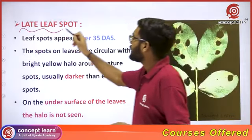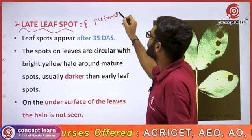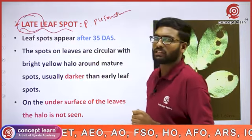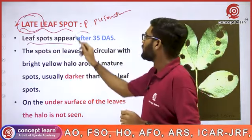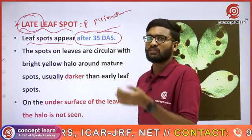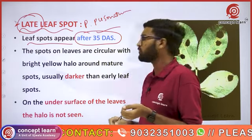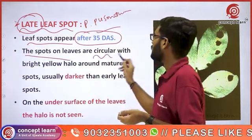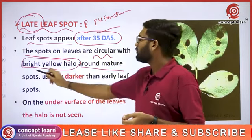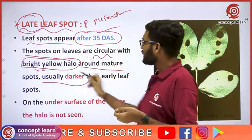Late leafspot is caused by Phaeoisariopsis personatum. It is called late leafspot because the spots appear after 35 days of sowing. The spots on the leaves are circular with a bright yellow halo around the mature spots, and they are usually darker than early leafspot spots.